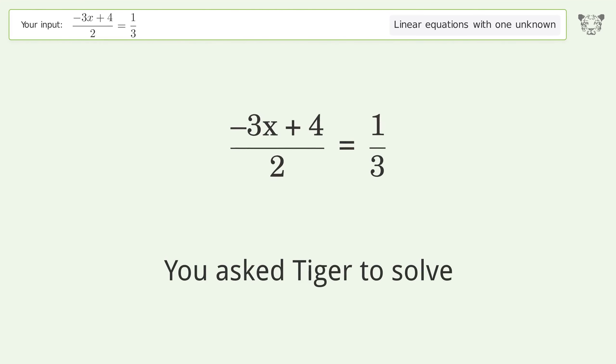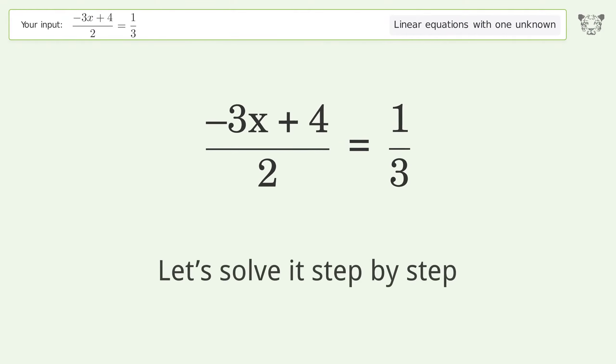You ask Tiger to solve this, which deals with linear equations with one unknown. The final result is x equals 10 over 9. Let's solve it step by step.